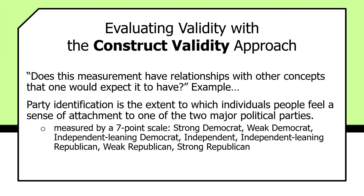The seven-point scale runs from strong Democrat, weak Democrat, independent-leaning Democrat, pure independent, independent-leaning Republican, weak Republican, to strong Republican. The interviewer asks: 'Generally speaking, do you think of yourself as a Republican, a Democrat, an independent, or what?' Those who choose Democrat or Republican are asked whether they would call themselves strong or not very strong. Those who choose independent, other party, or no preference are asked whether they lean closer to the Republican or Democratic Party. This is how survey researchers tease out the seven points. It's difficult to fault this measure from the standpoint of face validity.